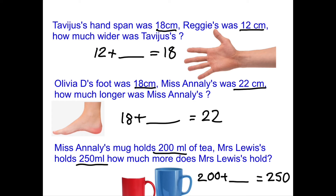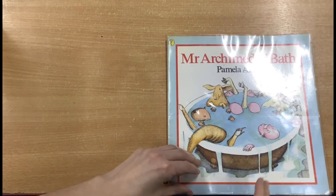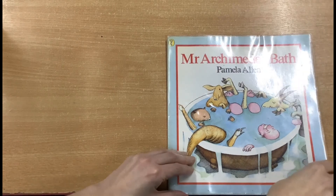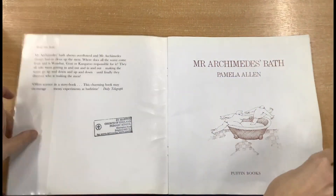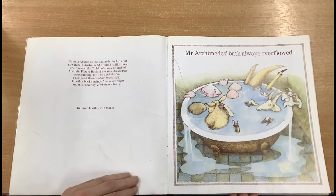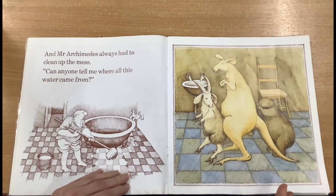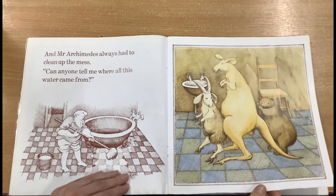When you've had a go at those, I've just got a silly little story I'm going to read — it's a bit rude, some of the pictures are a bit rude, they always make the children in class laugh a lot. So I hope you enjoy that. This is a funny story about capacity called Mr Archimedes' Bath. Mr Archimedes' bath always overflowed and he always had to clean up the mess. Can anyone tell me where all this water came from?